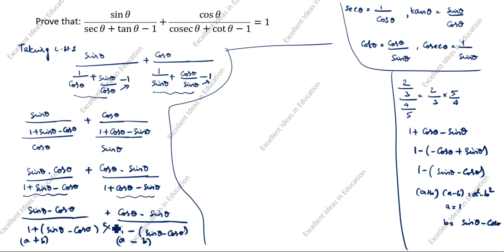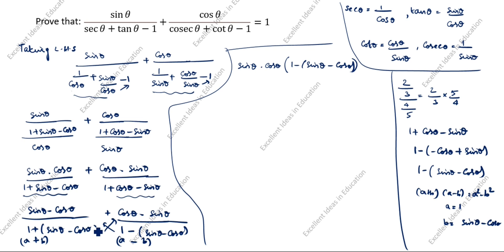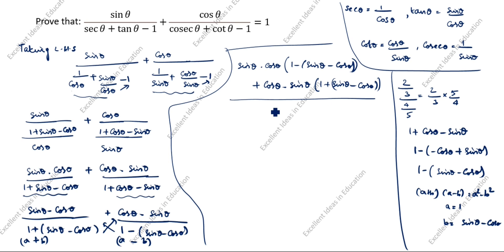We cross-multiply: sinθcosθ × (1 − (sinθ − cosθ)) plus cosθsinθ × (1 + (sinθ − cosθ)), all divided by 1² minus (sinθ − cosθ)².